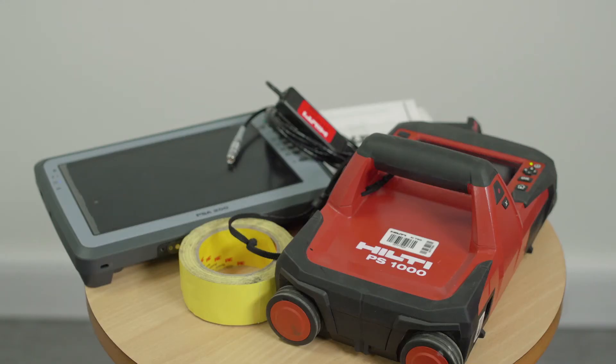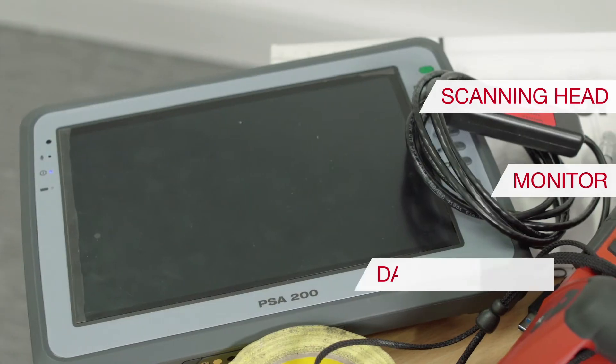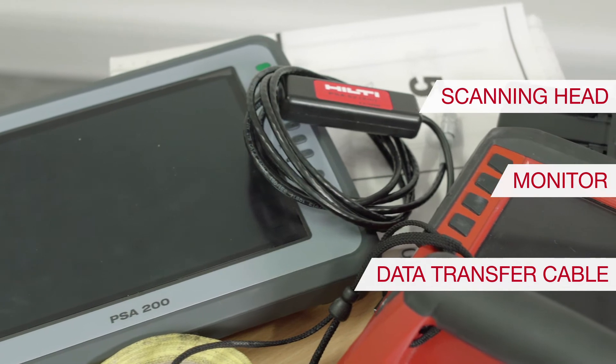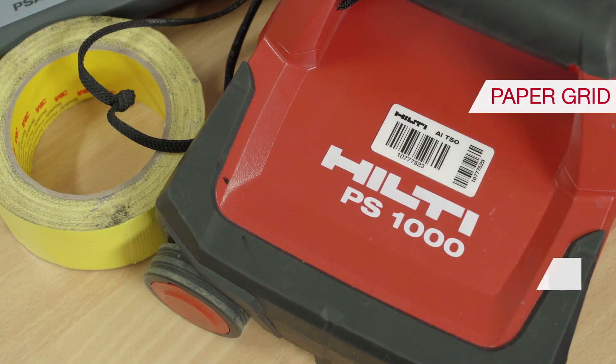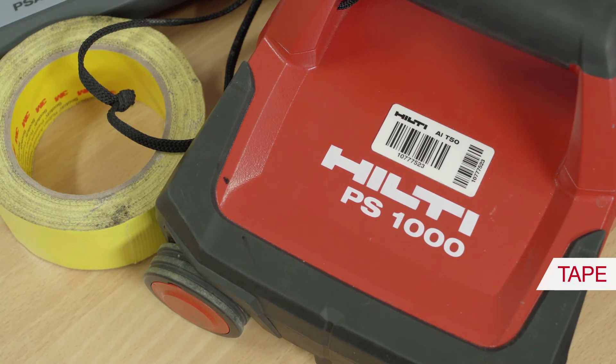So now we'll look at the components of the PS 1000 GPR system and there are five principal components to this system. You need your scanning head, the monitor, cable for transferring data between the scanner and the monitor, paper grids for putting on the surface of the concrete, and tape for securing the grid to the concrete.